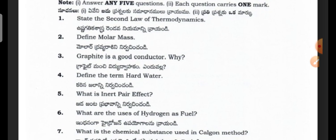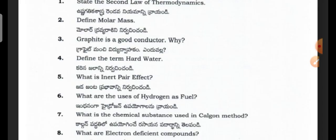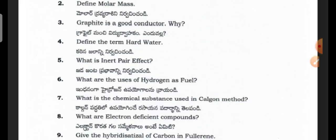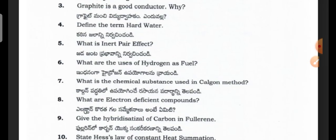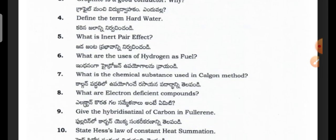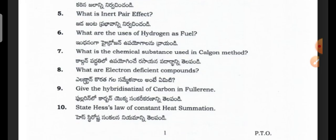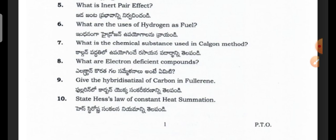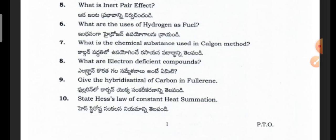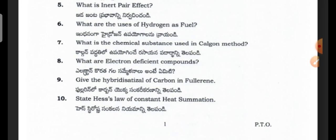Define molar mass. Graphite is a good conductor — why? Define the term hard water. What is inert pair effect? What are the uses of hydrogen? What is the chemical substance used in the Calgon method? What are the electron deficient compounds? Give the hybridization of carbon in fullerene.